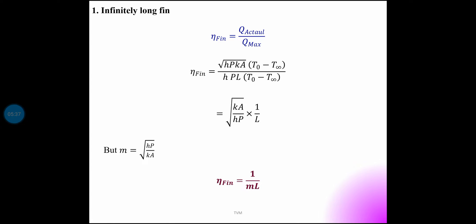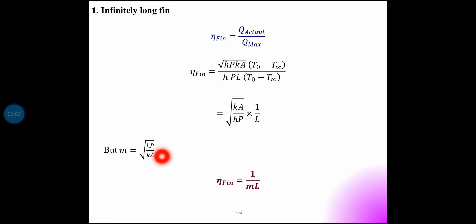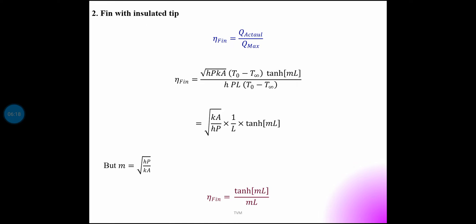The fin efficiency ratio equals actual divided by maximum. We have different cases: infinitely long fin, and fin with insulated end. For an infinitely long fin, the efficiency is equal to 1 divided by mL. For a fin with an insulated tip, it is equal to tanh(mL) divided by mL.